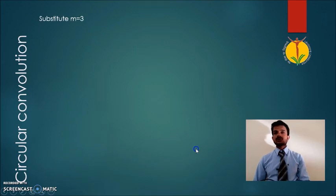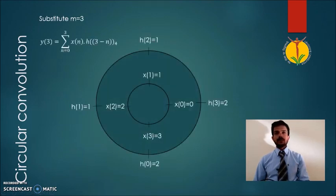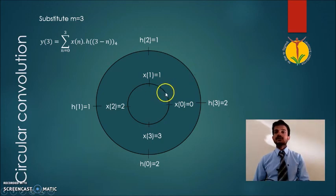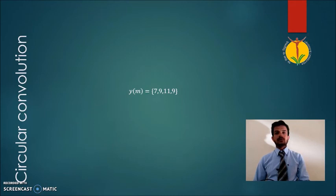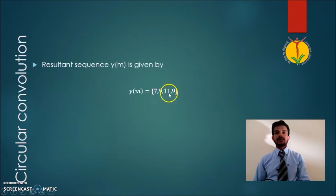When we substitute m equal to 3, we again plot the sequence along the circular axis — the outer circle is h of n and the inner circle is x of n — and perform the corresponding multiplication. The final convolution value is 9. Summarizing all values: y of m equals 7, 9, 11, 9, which is the circular convolution between x of n and h of n.